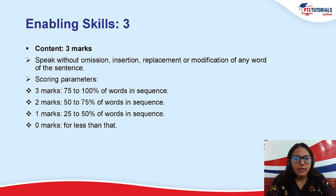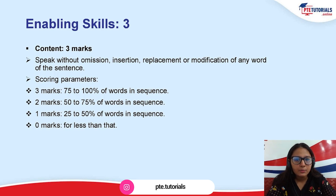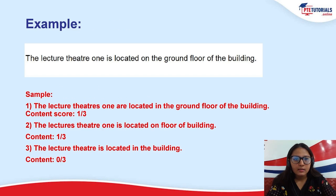The most important thing is how content is analyzed in PTE exams. You will get three marks if you try to speak 75 to 100 percent of the words. Now, there is a difference between speaking 75 to 100 percent of the words and speaking 75 to 100 percent of the words in sequence. Sequence is one of the very important factors. For example, if the sentence is 'The lecture theater one is located on the ground floor of the building' and I speak 'lecture theater located ground floor one of the building,' I am speaking 75 to 100 percent of the words, but not in sequence. If I speak 'the lecture theater one is located on the ground floor,' that is 75 to 100 percent in sequence. Sequence matters a lot towards the content score.